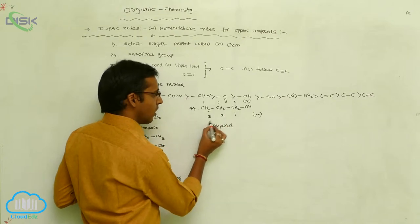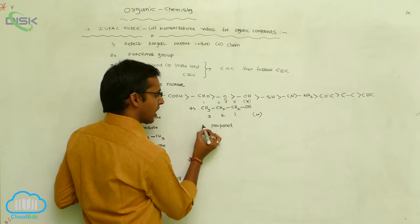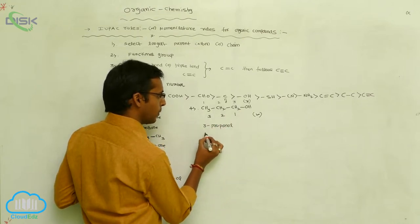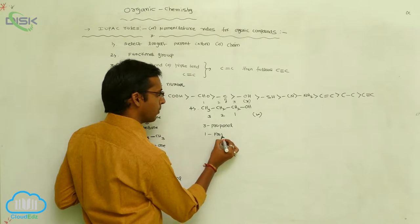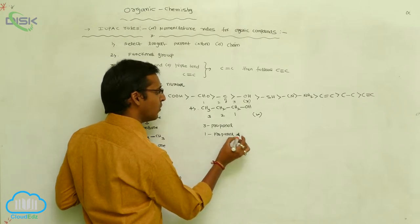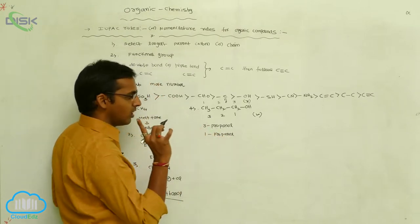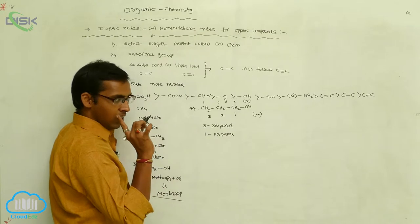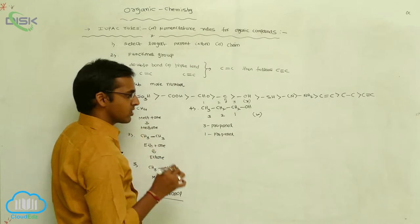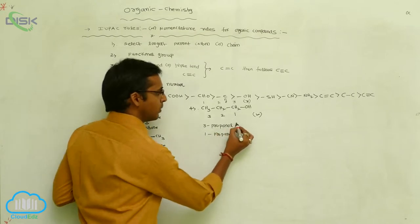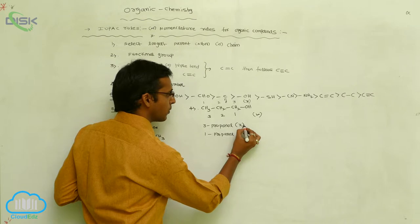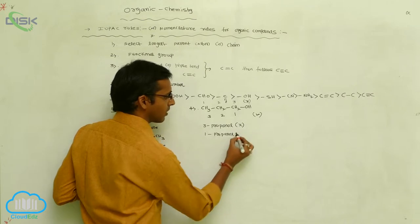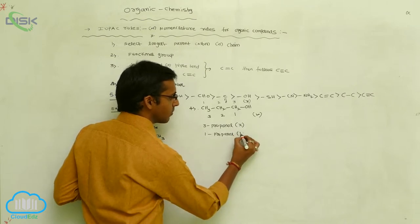According to position, this is your 3-propanol, and another one is 1-propanol. But in these two, only one name is correct. The name 3-propanol, according to IUPAC rules, is wrong. 1-propanol is right.